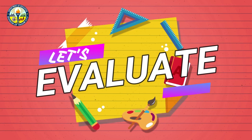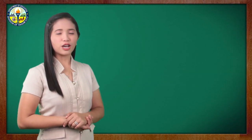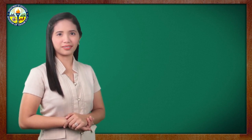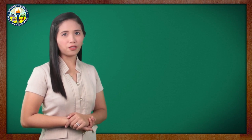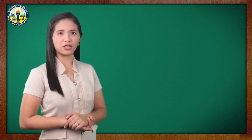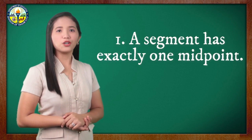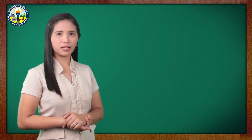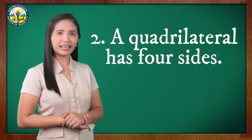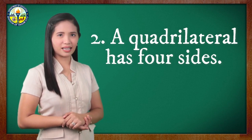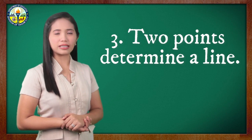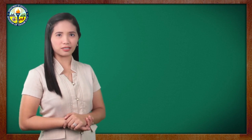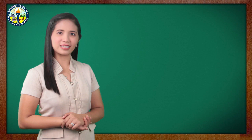Transform the following statements to their corresponding if-then form and identify the hypothesis and conclusion of each. Number one: a segment has exactly one midpoint. Number two: a quadrilateral has four sides. Number three: two points determine a line. I will give you three minutes to answer. Your time starts now!